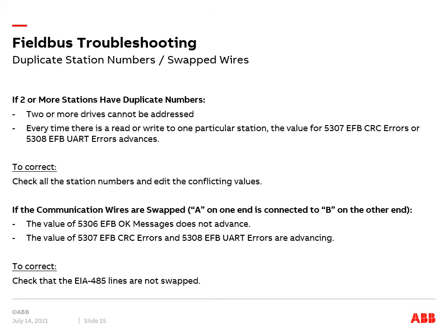To correct duplicate station numbers, check all the station numbers and edit any conflicting values. If communication wires are swapped — in other words, channel A on one end is connected to channel B on the other end — the value of 5306 EFB OK messages does not advance, and the values of 5307 EFB CRC errors and 5308 EFB UART errors will advance. To correct this problem, check that the 485 lines are not swapped.